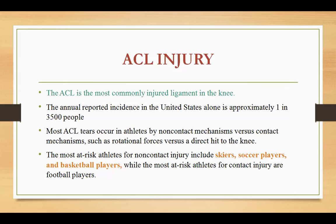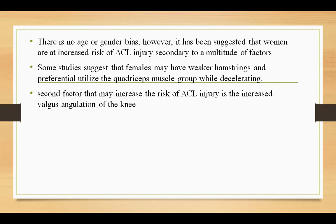The next topic is the ACL — the anterior cruciate ligament — which is the most commonly injured ligament in the knee. In the USA, approximately one in every thousand people is affected. Most ACL tears occur in athletes by a non-contact mechanism such as rotational forces, rather than direct contact to the knee. Athletes most at risk for non-contact injuries include skiers, soccer players, and basketball players. There is no significant age difference, but females are more commonly affected by ACL injury.